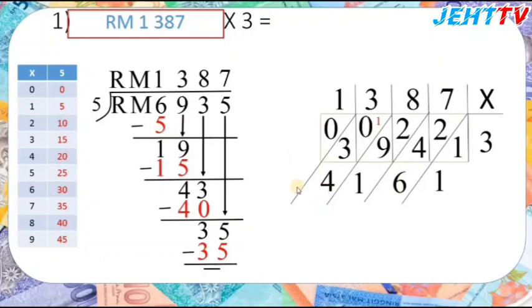Then 1 plus 3 equals 4. We don't need to write down the leading zero. So the answer for this question is 4,161, and don't forget to write down the RM.